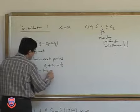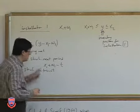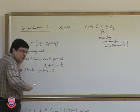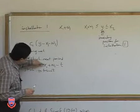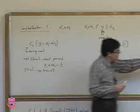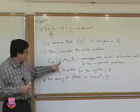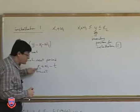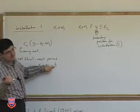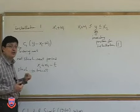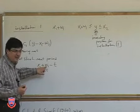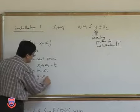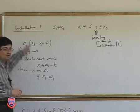The stock in transit next period will be the quantity ordered this period only, since W1 has already arrived. So stock in transit next period equals Y − X1 − W1. Recalling the two-period lead time diagram: W1 was ordered previously and arrives this period; the only quantity remaining in transit is Y − X1 − W1.